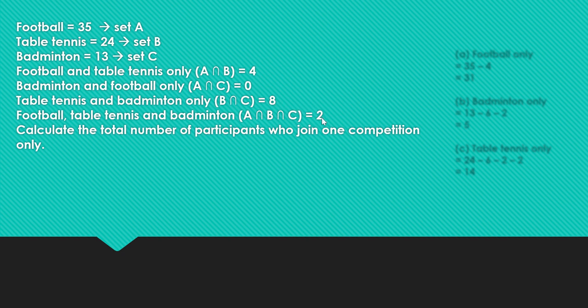And then there are 3 participants who joined all three competitions: football, table tennis, and badminton. The question asks us to calculate the total number of participants who joined one competition only. We know there is an intersection of all 3 sets, which is 3 in the middle.